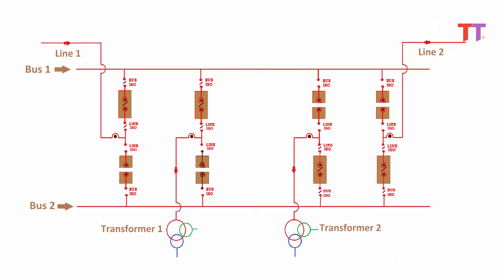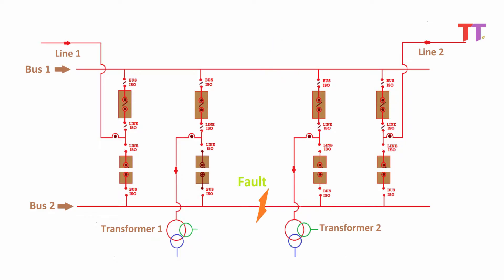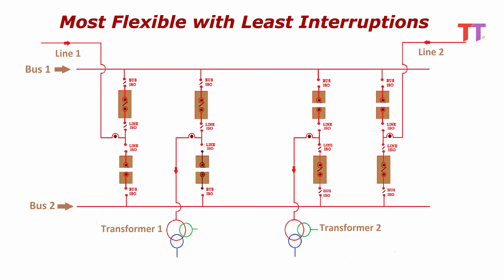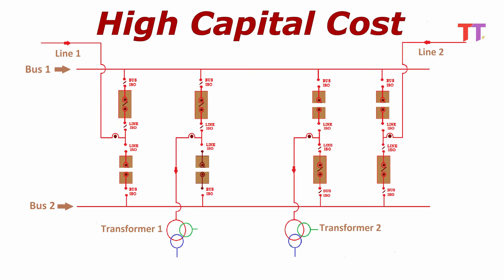To shift the load of transformer 1 from bus 1 to bus 2: first close bus 2 side isolators, close bus 2 side circuit breaker, then open bus 1 side circuit breaker and isolators. Hence the load of transformer 1 is shifted effortlessly. To shift the load back to bus 1, the exact reverse procedure is followed. In case of a fault on bus 1, the complete load can be shifted to bus 2, and in case of a fault on bus 2, the complete load can be shifted to bus 1, so there is minimum interruption in case of bus faults. Advantages: this system is the most flexible and causes the least interruption. Disadvantage: capital cost is very high as 2 breakers are required for each bay.